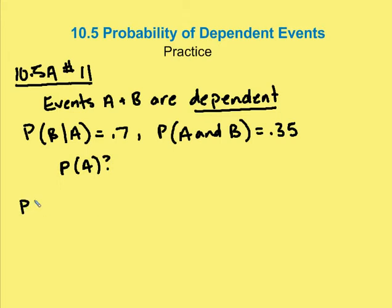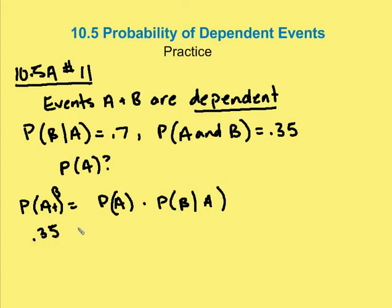So we set up our equation. Probability of A and B is equal to the probability of A times the probability of B given A. Well, I know that the probability of A and B is 0.35. And I know the probability of B given A is 0.7.